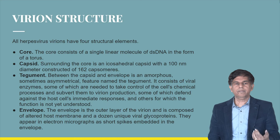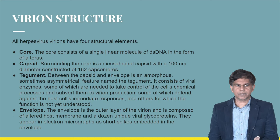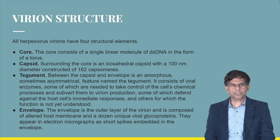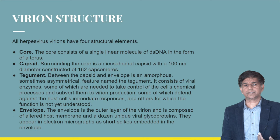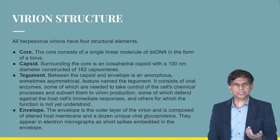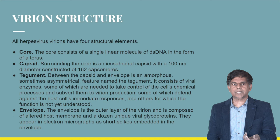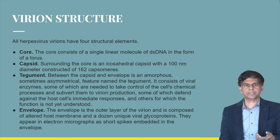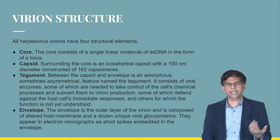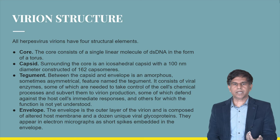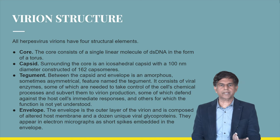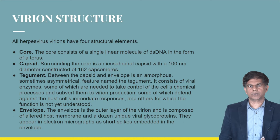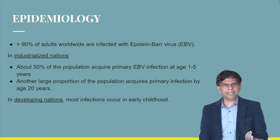Looking at the virion structure, it is similar to other herpesviridae family members. There is a core consisting of a single linear DNA, surrounded by an icosahedral capsid with a 100-nanometer diameter constructed of 162 capsomeres. The next layer is the tegument, which consists of viral enzymes needed to take control of the cell's chemical processes and subvert them to virion production. The outer layer is the envelope, composed of altered host membrane with unique viral glycoproteins and short spikes.